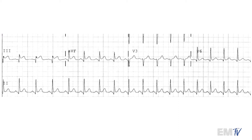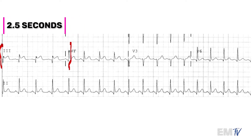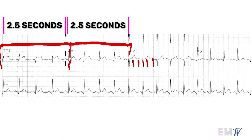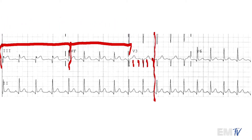Most people's base-six math isn't as strong as their base-10 math, so I'll show you a quick trick to break this up into a six-second strip. Each one of these lead segments represents two and a half seconds of time. So we'll take two of those — that's two and a half seconds, and another two and a half seconds — then add another second by taking five large boxes after that second grouping of leads. Each large box represents 0.2 seconds or 20 milliseconds, which is a fifth of a second. At this point, we have a six-second strip.